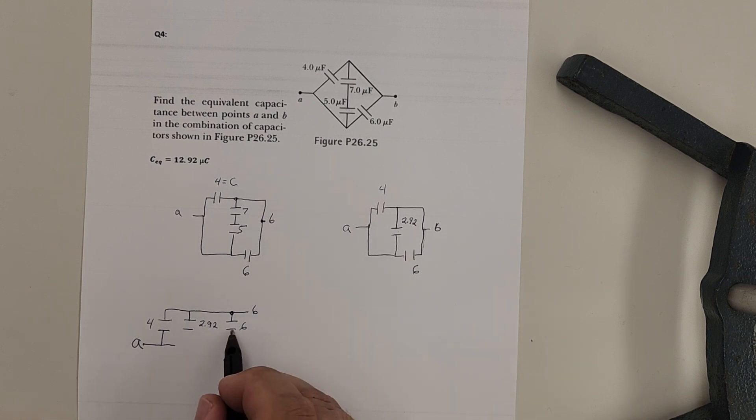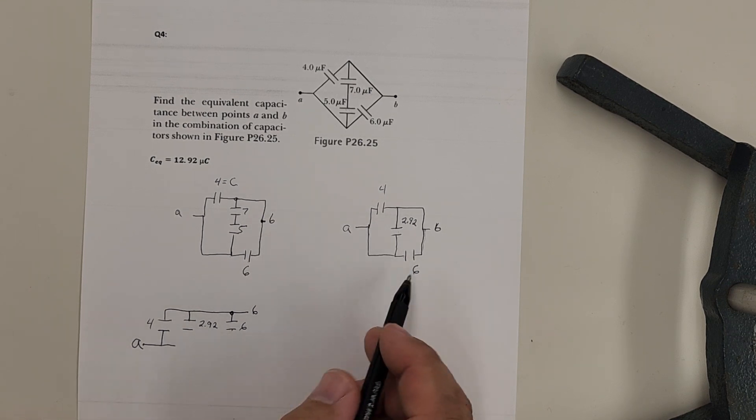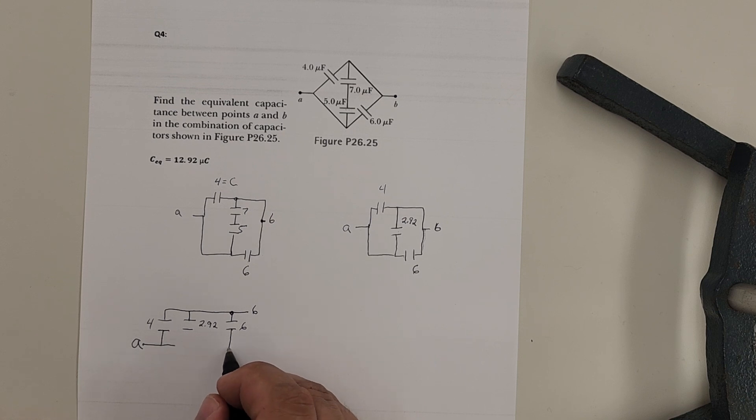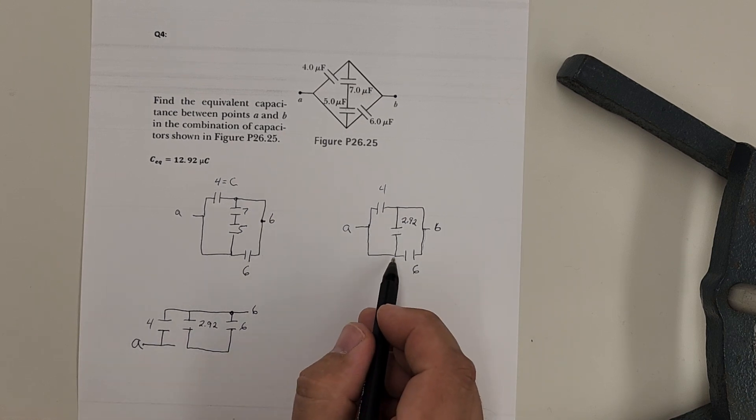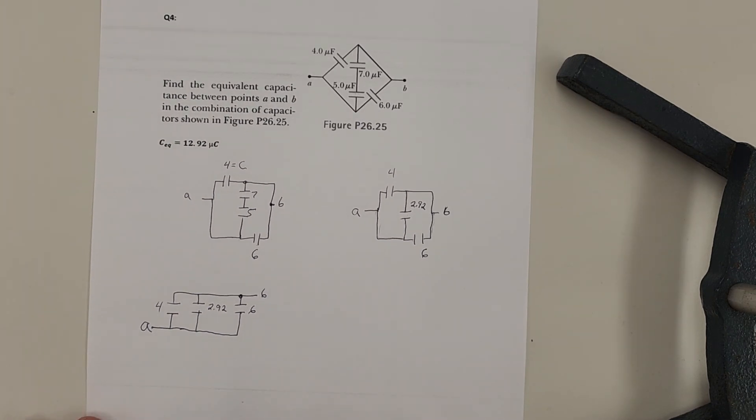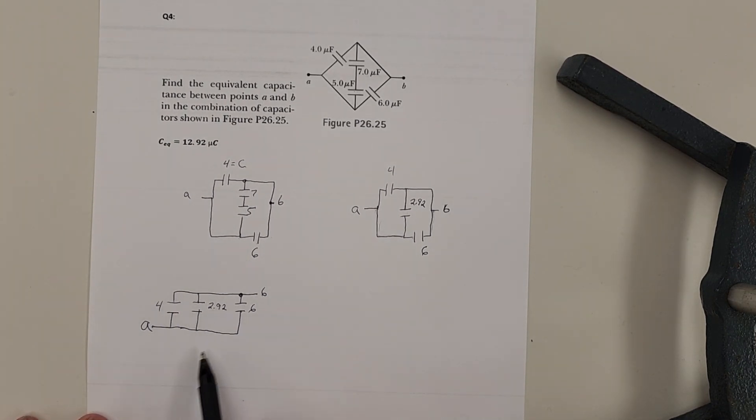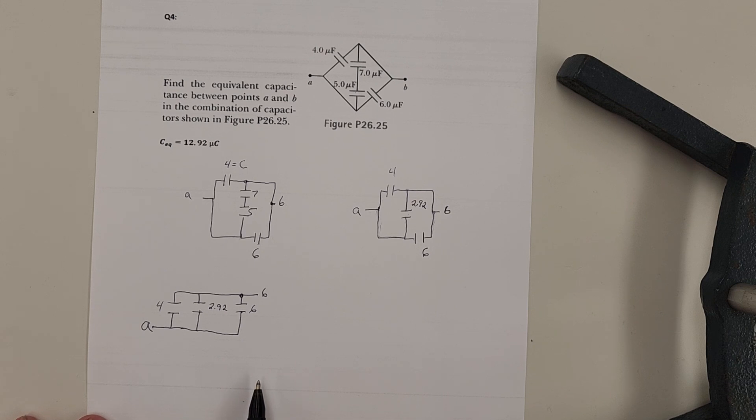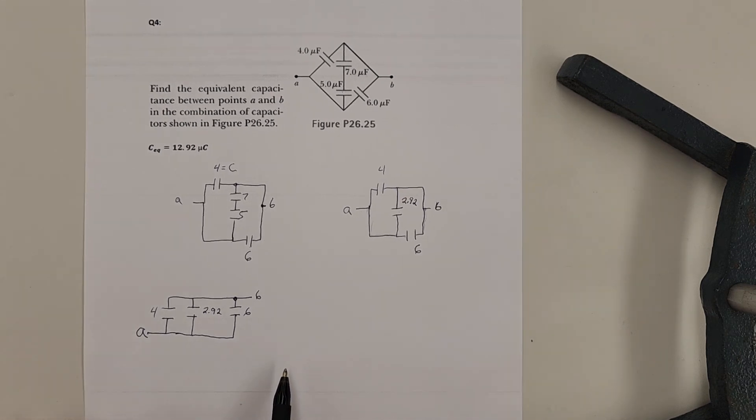Going through that capacitor. That one and this one are tied. And this is tied back to A. So that's my other leg. So by redrawing it, now you can see that all of these are in parallel with each other. They're all in parallel, which means they all just add up.